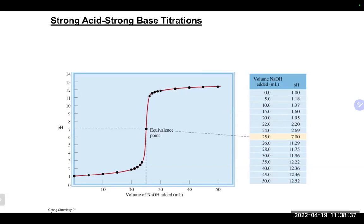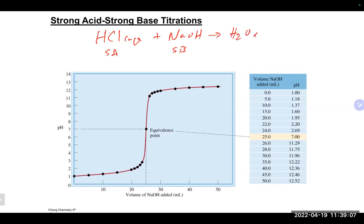We are still in Chapter 14 and we started talking about titrations last time. We talked about this titration here, which was a strong acid-strong base. We used hydrochloric acid, a strong acid, and sodium hydroxide, a strong base, which form water and sodium chloride — a salt. Last time we went through the different parts of the titration and how to calculate the pH at each part.